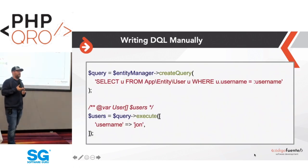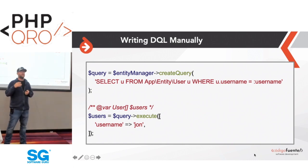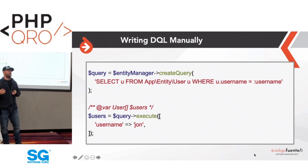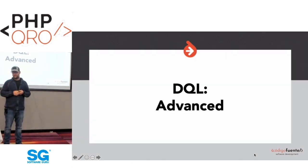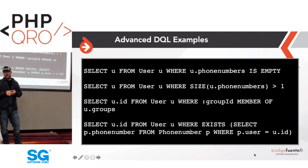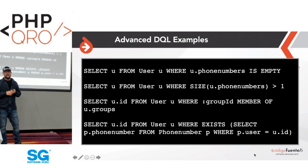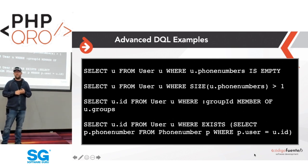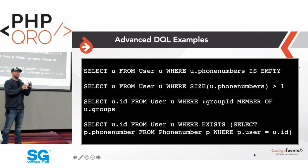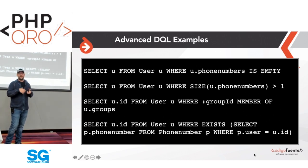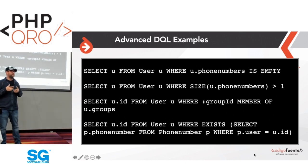Some people prefer the query builder; others prefer to write DQL manually like SQL. DQL supports advanced queries — for example, fetching all user objects where the phoneNumbers relationship is empty (meaning the user has no associated phone numbers). The SQL for that would be more complex, but in DQL you simply say: give me all users where u.phoneNumbers IS EMPTY.